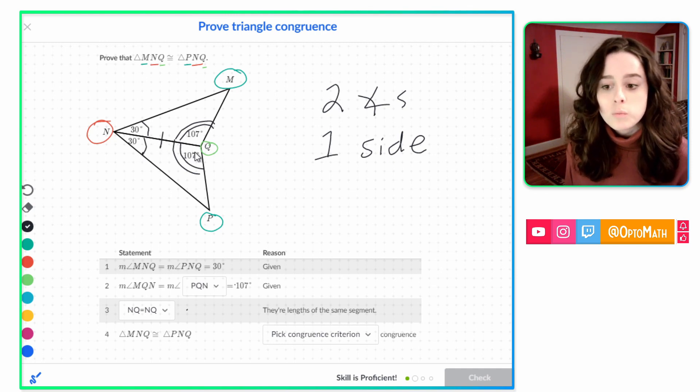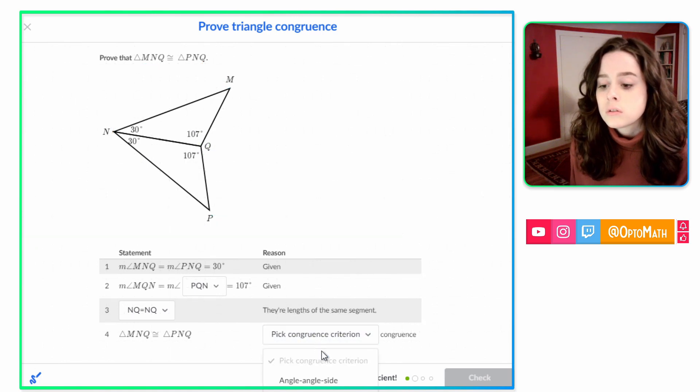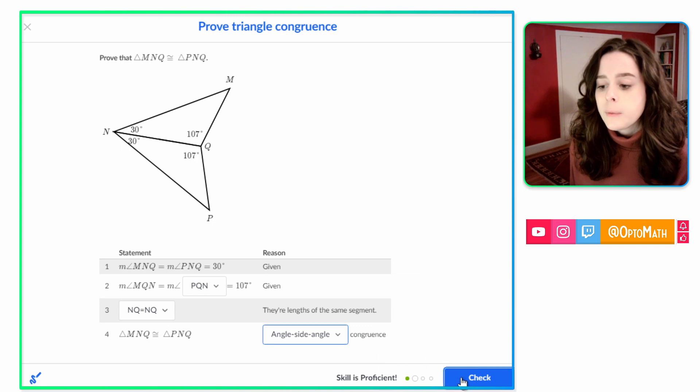Either that direction when we start with a 30 or if we start with a 107. Angle, side, angle. So it's going to be that angle, side, angle. And here we go.